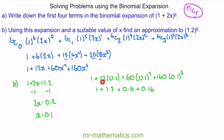Working this out: 12 times 0.1 gives 1.2; 60 times 0.1 squared is 0.6; and 160 times 0.1 cubed is 0.16. Adding these four terms together gives 2.96, which is our approximation.